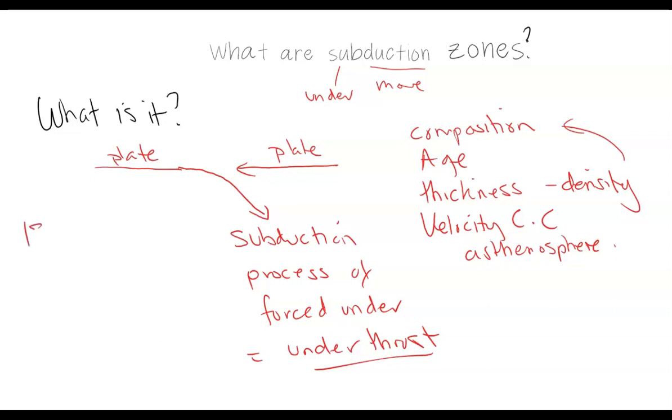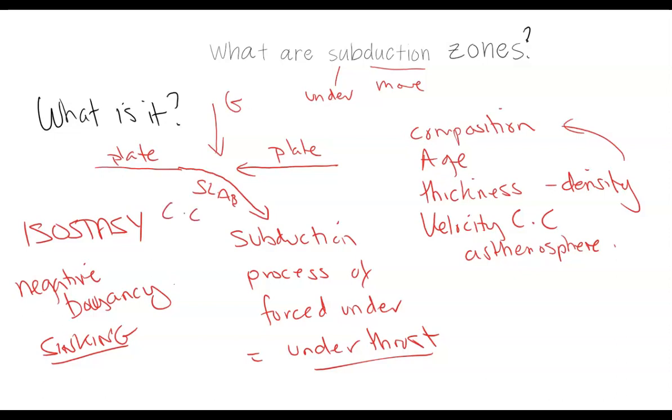This is to do with isostasy, which is the science of floating, buoyancy. It's also negative buoyancy, the product or the effect of sinking. It's the fancy word for sinking. So one plate is going to sink, and this plate we call it the slab. The slab is going to be dragged down, pushed down, pulled down. Obviously, we have gravity as a consistent force, but also we have the convection currents in the asthenosphere.